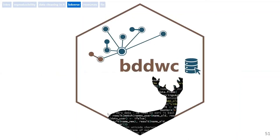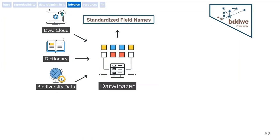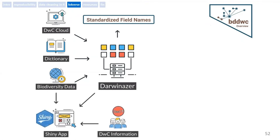So for that purpose, we developed the BD Darwin Core package. BD Darwin Core is basically a system to Darwinize your data. It uses the Darwin Cloud, which is a huge lookup table that takes different variations and adjusts them to the standardized field name — it's basically our default dictionary. You can also create and input your own dictionary for different reasons. Once the data is attached with a specific dictionary, it's been standardized. We also have a Shiny app that allows you to carefully do it manually and create your own dictionary if you want.